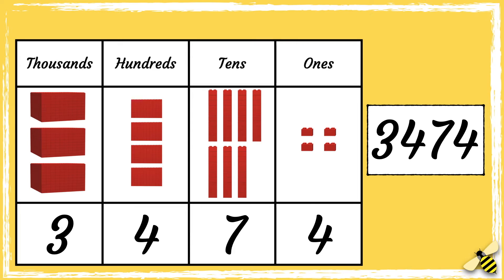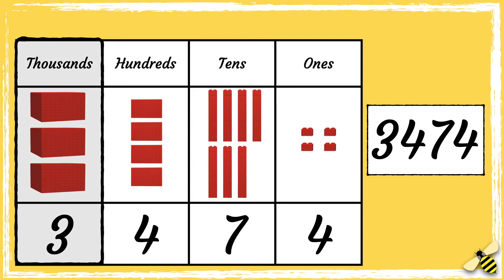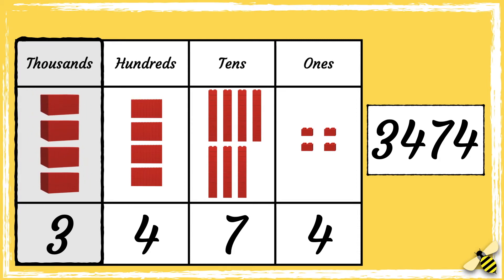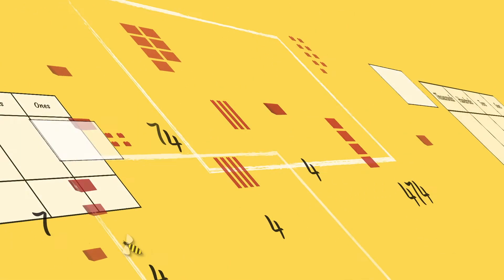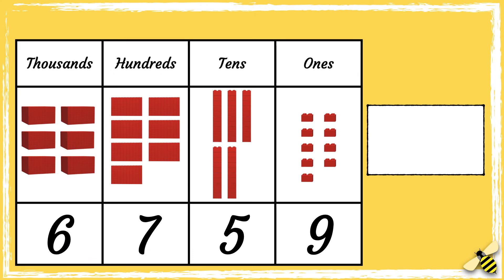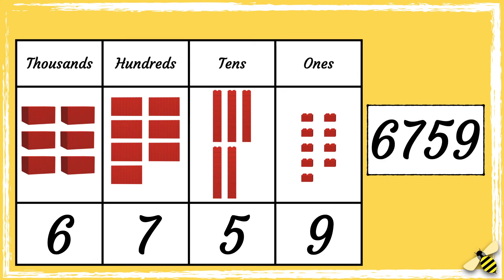Let's have a look at another example. Here is a place value grid showing the number 3474. When we add a thousand to a number, we need to look at the thousands column. Three thousands becomes four thousands, so the new number is four thousand four hundred and seventy four.